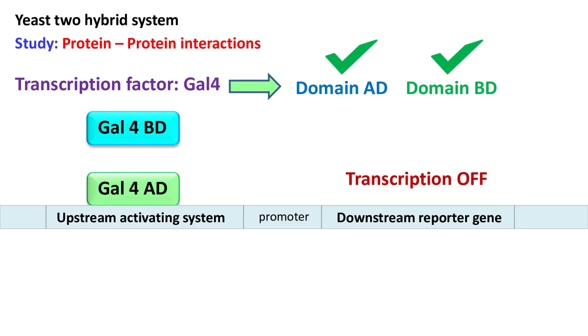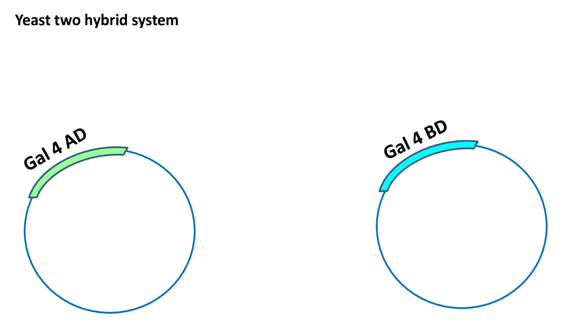In the yeast two-hybrid system, we use two plasmids. One plasmid has a gene for the Gal4 AD domain, and the other plasmid has a gene for the Gal4 BD domain.